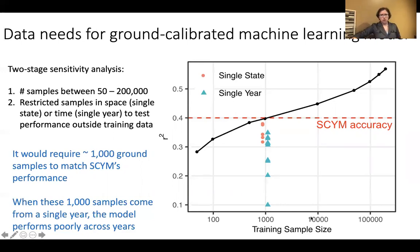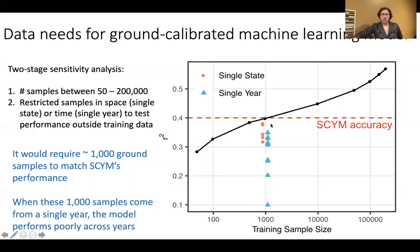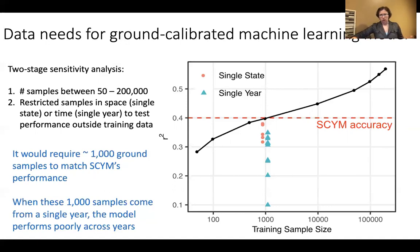On the plot, training sample size is on a log x-axis, and the red line shows SCIM's accuracy. Not unexpectedly, more training samples give higher accuracy. About 1,000 training samples would give accuracy similar to SCIM if randomly sampled throughout the time period and region. But when restricted to a single year or single state and applied to the whole region, accuracy drops considerably. This demonstrates the value of having a scalable approach and what crop simulation models can bring, since having 1,000 ground fields across a full decade is quite rare.